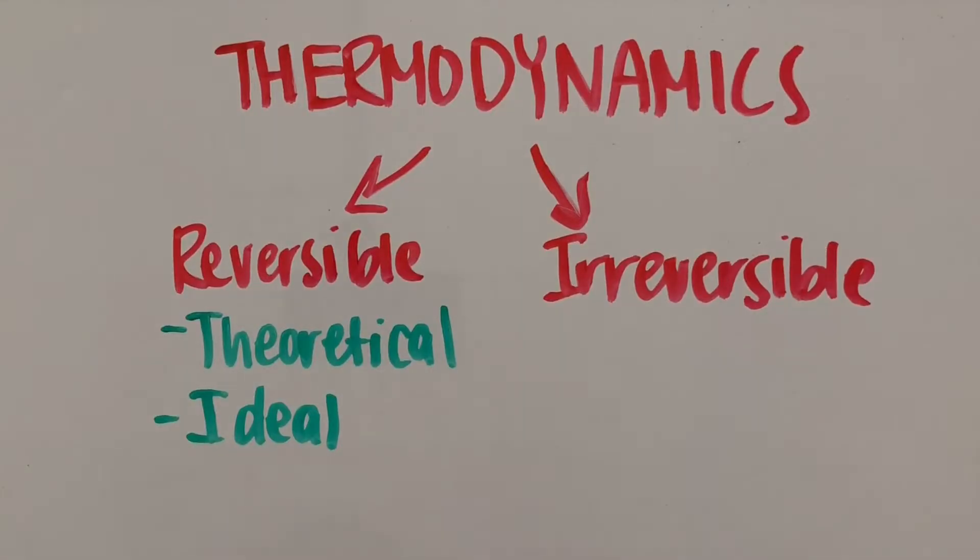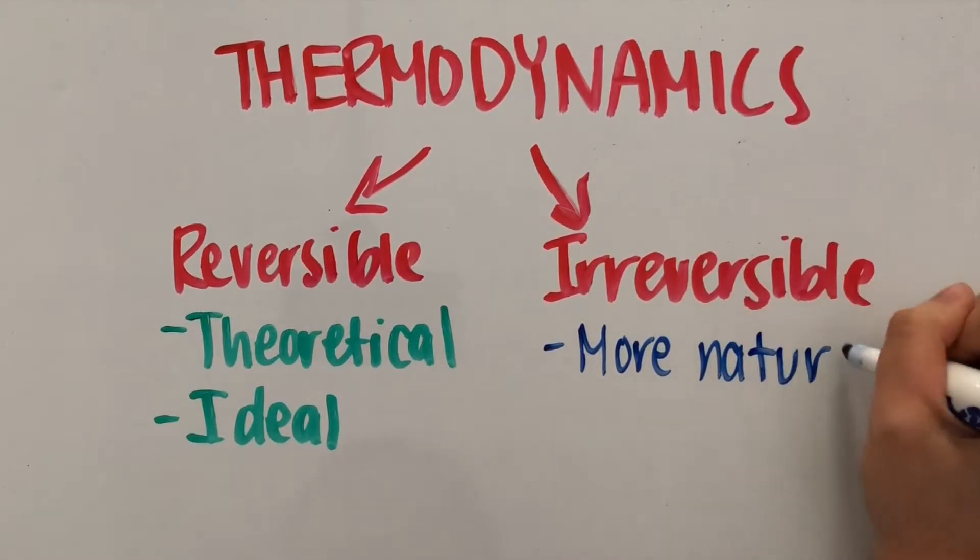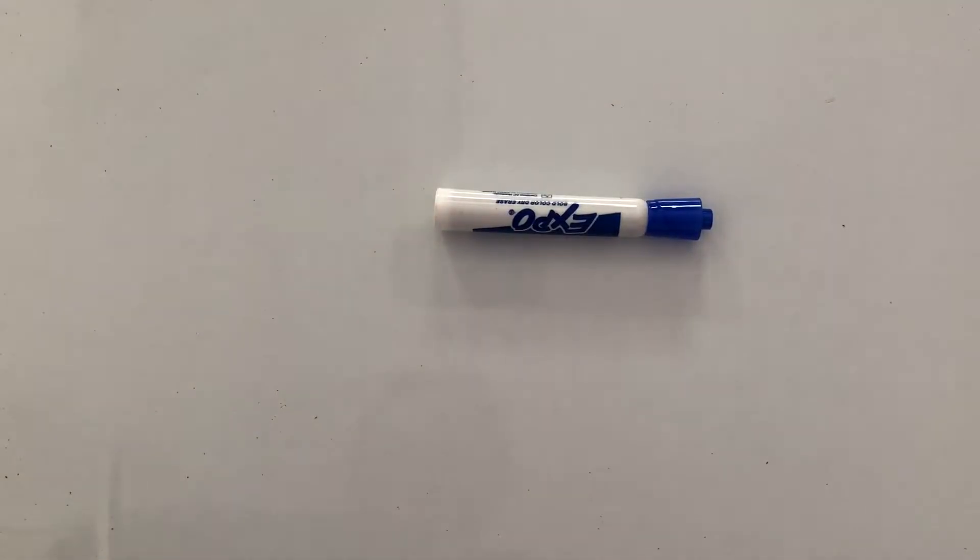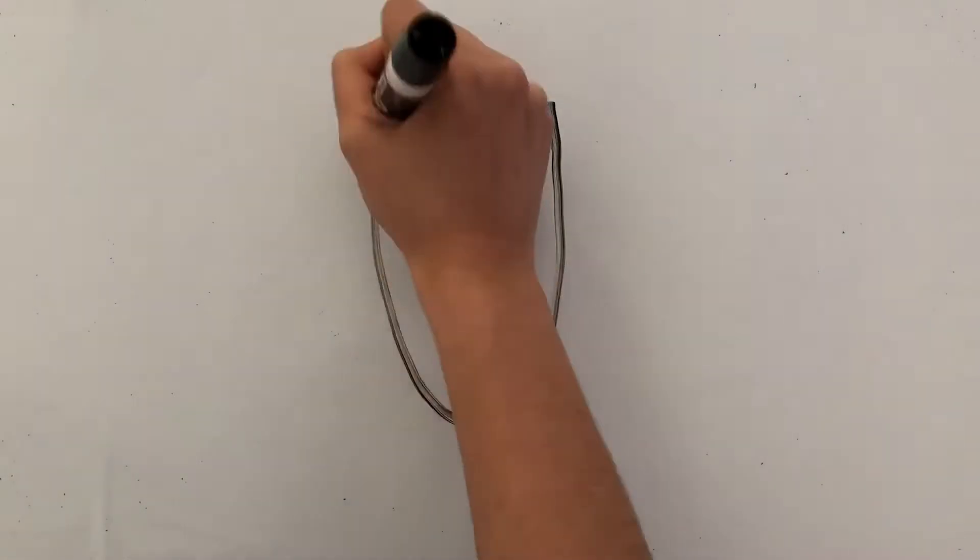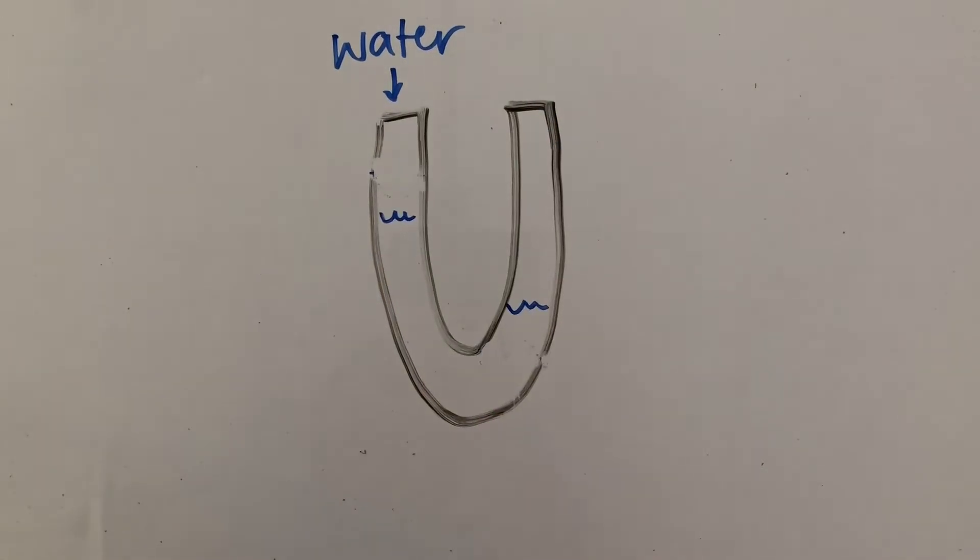On the other hand, irreversible processes are what occur more naturally, and they can't rewind to their original states. It's like the marker being knocked over or water flowing from one side of a U-shaped tube into another until both sides are balanced out.